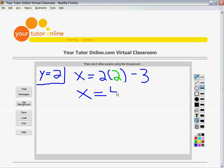2 times 2 is 4, subtract 3, and x is equal to 1. And now we know both solutions, x is equal to 1 and y is equal to 2.